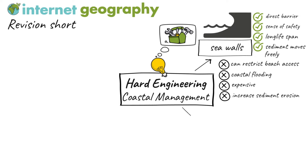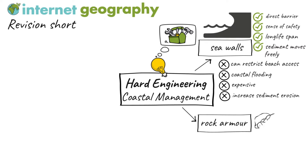Rock armour is a barrier made up of large boulders placed in front of a cliff or seawall to absorb wave energy. There are a range of advantages in using rock armour to manage coastal erosion.